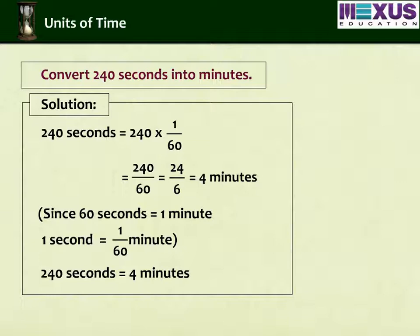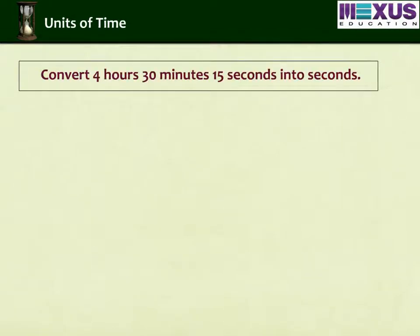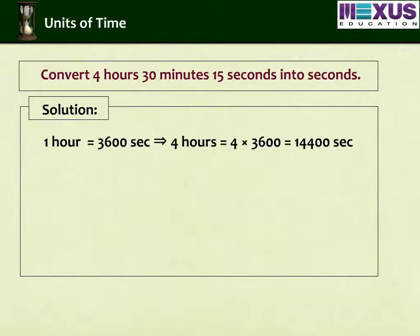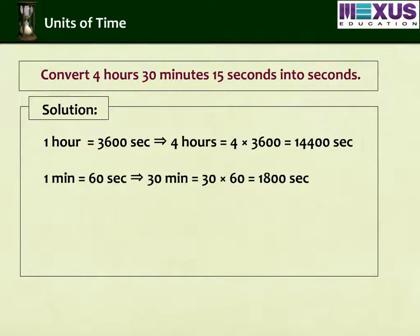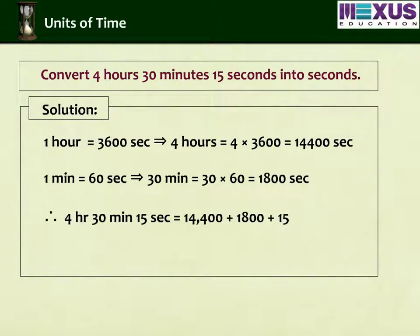Now let us see how to convert hours into seconds. Convert 4 hours 30 minutes 15 seconds into seconds. Solution: 1 hour equals 3,600 seconds, therefore 4 hours equals 4 into 3,600 equals 14,400 seconds. 1 minute is equal to 60 seconds, so 30 minutes is equal to 30 into 60, which equals 1,800 seconds. Therefore, 4 hours 30 minutes 15 seconds is 14,400 plus 1,800 plus 15, which equals 16,215 seconds.